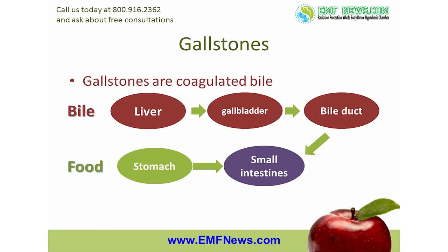Gallstones are nothing more than coagulated bile. Bile is the green alkaline liquid produced by the liver, which among other things helps us digest our food. The liver produces about a liter of bile a day and stores it in a muscular sac called the gallbladder. The gallbladder then squirts this bile down a tube called the common bile duct into the small intestines to mix with the food that comes from the stomach.